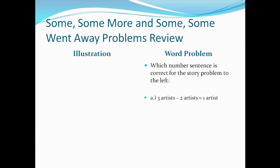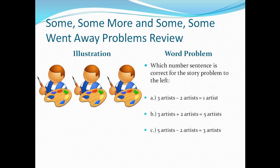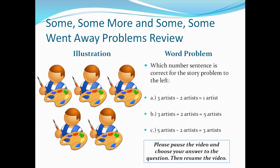Let's take a look at another example. Is it going to be A: Three artists minus two artists equals one artist. B: Three artists plus two artists equals five artists. Or C: Five artists minus two artists equals three artists. Watch both parts, then pause the video and make your answer choice. The correct answer is letter B: Three artists plus two artists equals five artists.